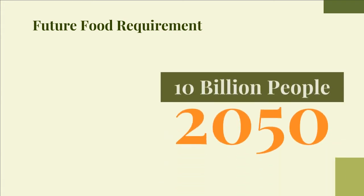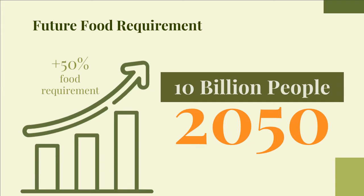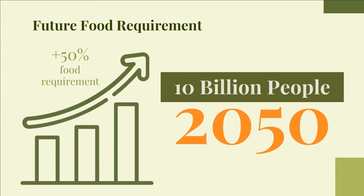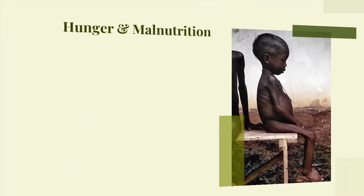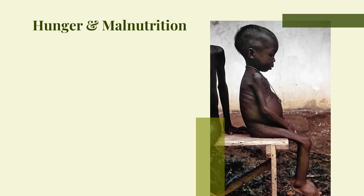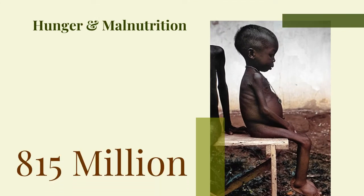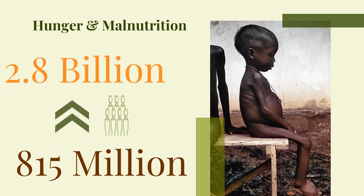According to the Food and Agriculture Organization (FAO), the world's population is projected to reach 10 billion by 2050, boosting food requirements by 50%, especially in developing countries. Moreover, there are approximately 815 million people who are currently undernourished, and it is expected that an additional 2 billion people will be in this category by 2050. This situation calls for profound changes in the global food production systems.